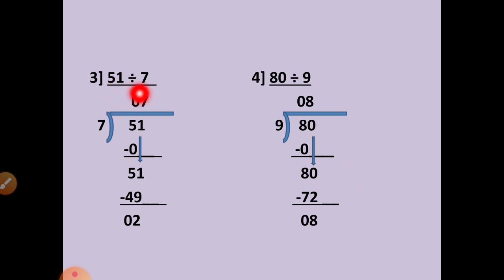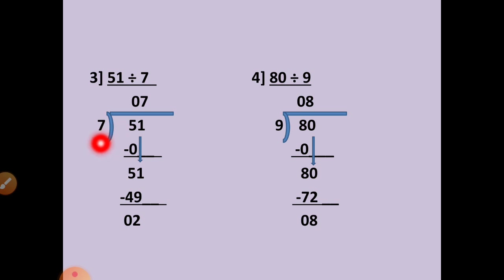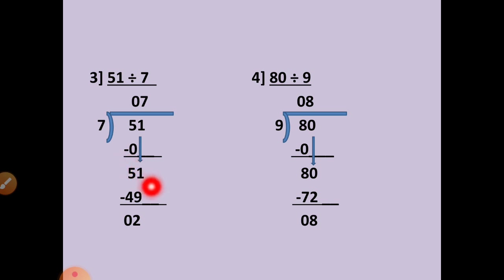Question 3: 51 divided by 7. We will take the first number. Here also this number is smaller than the divisor, so we will take the table of 7 zero times. 7 zeros are 0. 5 minus 0 equals 5. Write 1 down. Now this number is 51. In the table of 7, 51 is not there, but the smaller number is 49. 7 sevens are 49. 51 minus 49 equals 2.